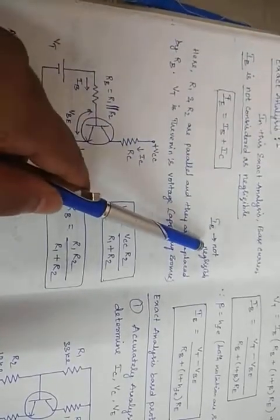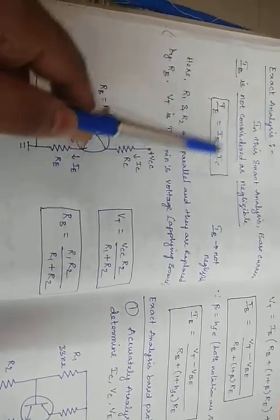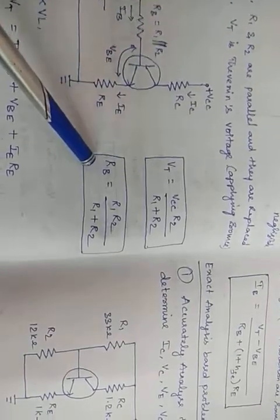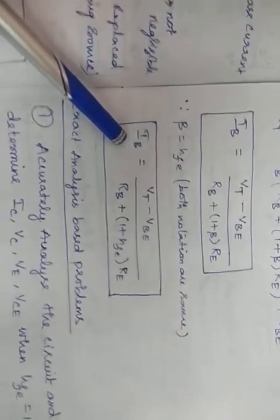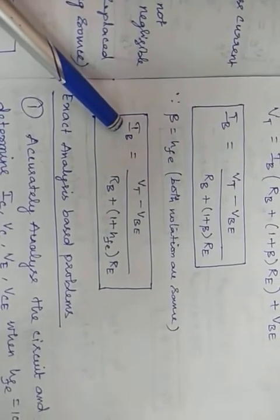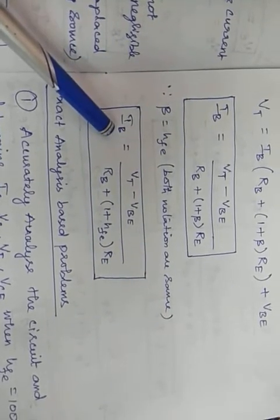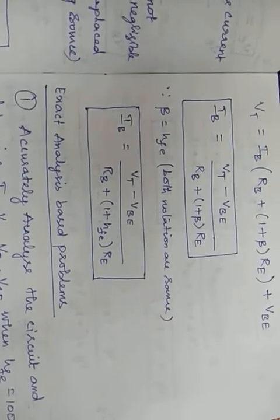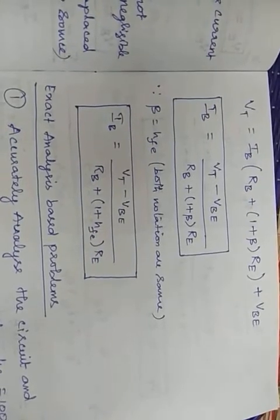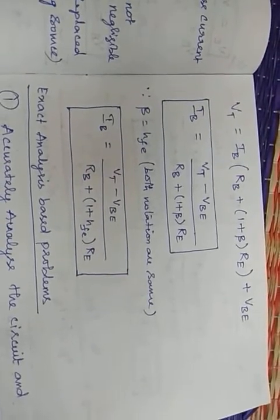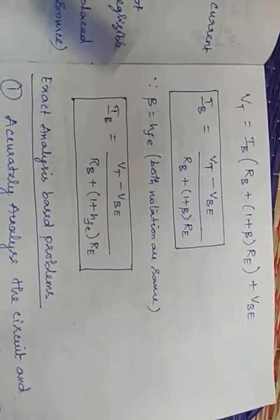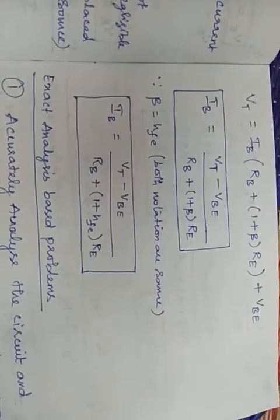To summarize exact analysis: the main assumption is IB is not negligible. New parameters calculated are Thevenin voltage VT, equivalent base resistance RB, and IB. All other parameters — VE, VB, VC, VCE — are derived using the same equations as in approximate analysis.